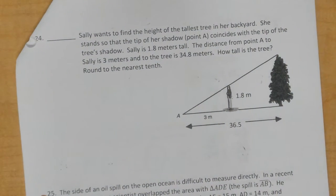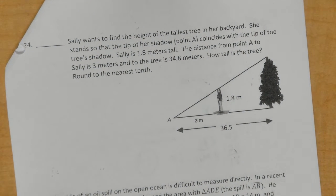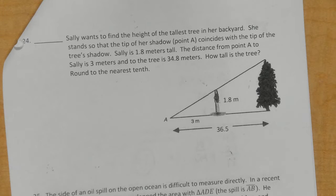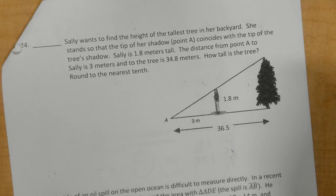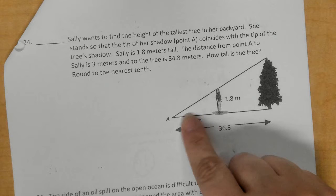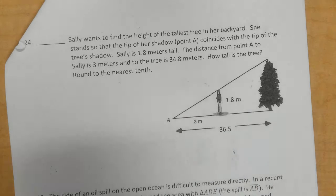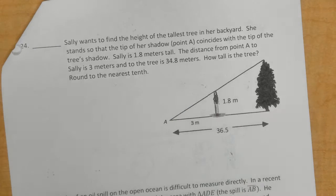And then the last page. It says Sally wants to find the height of the tallest tree in her backyard. She stands so that the tip of her shadow, point A, coincides with the tip of the tree's shadow. Sally is 1.8 meters tall. Here's Sally. The distance from point A to Sally is 3 meters, and from the tree to point A, we have 34.8 meters. How tall is the tree?